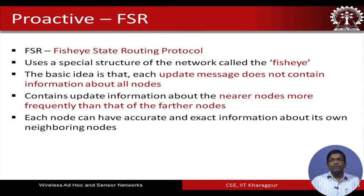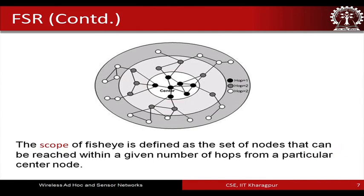The underlying assumption of FSR is that updates should be done more frequently to nearer nodes than further nodes. I promised to show you the fisheye structure assumed in the FSR protocol — and this is what you see in the figure. By looking at it you can understand that this structure basically looks like a fisheye, which gives the name Fisheye State Routing to this protocol.